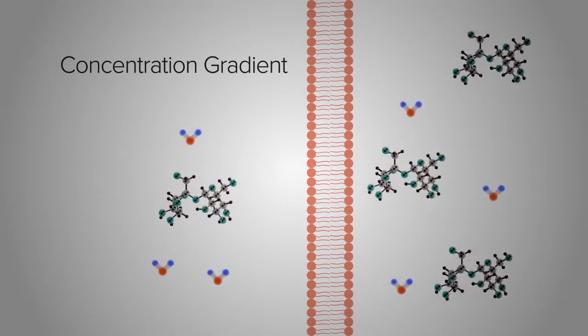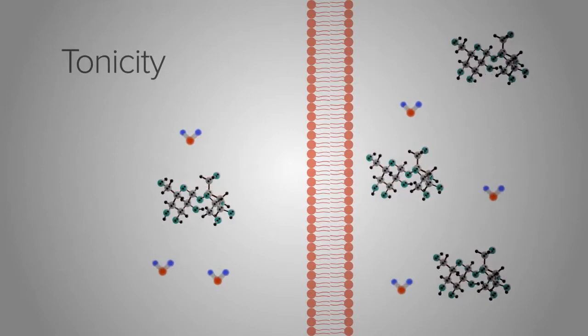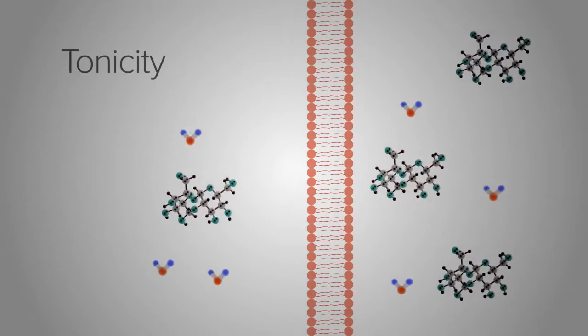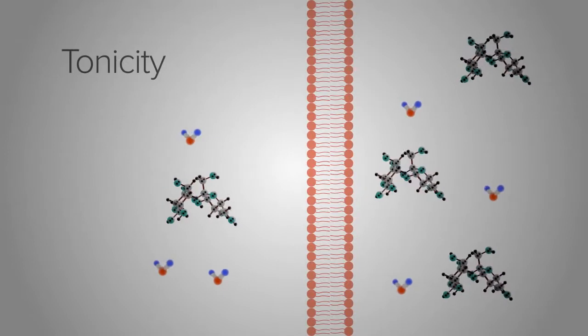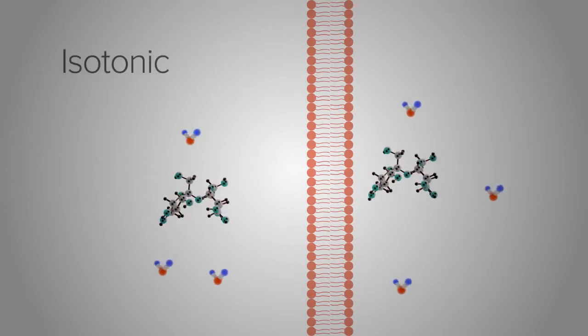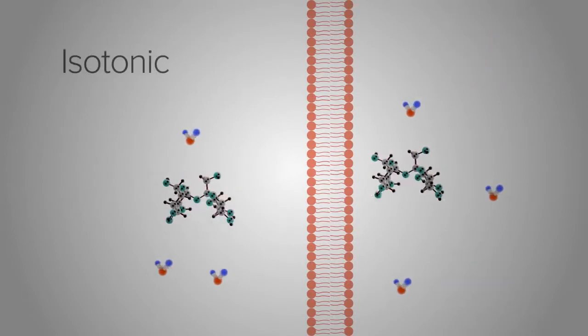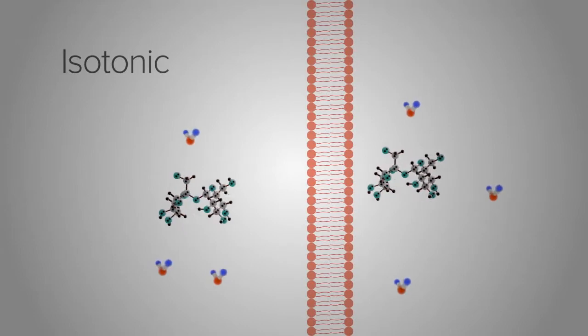The measurement of a concentration gradient is called tonicity. There are three main types of tonicity that can occur with a concentration gradient. In an isotonic solution, the concentration of a solute is the same on both sides of a membrane, so there is no movement of water across the membrane.